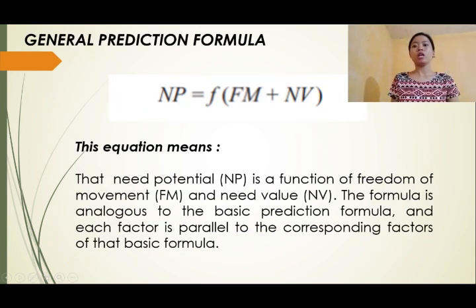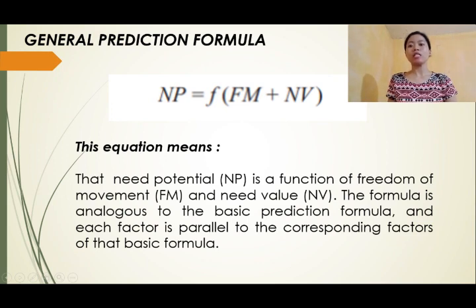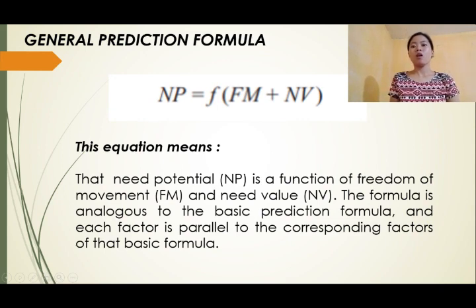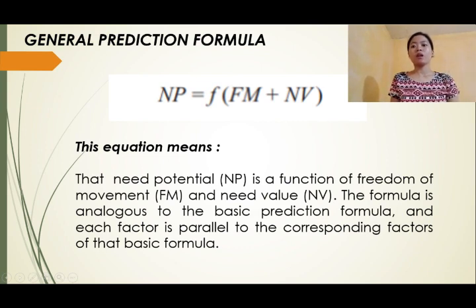The general prediction formula states that need potential is a function of freedom of movement and need value. Rotter's two most famous scales for measuring generalized expectancies are the Internal-External Control Scale and the Interpersonal Trust Scale. The Internal-External Control Scale, popularly called the Locus of Control Scale, attempts to measure the degree to which people perceive a causal relationship between their own efforts and environmental consequences. The Interpersonal Trust Scale measures the extent to which a person expects the word or promise of another person to be true.